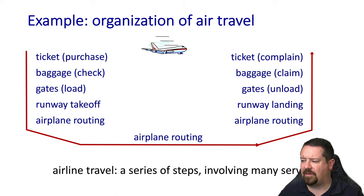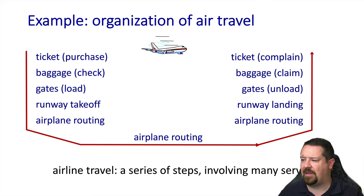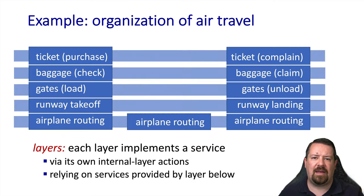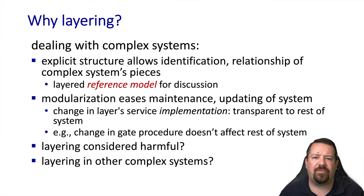The aircraft routing completes, there's a landing that corresponds to the takeoff, you unload at a gate, claim baggage, and of course we can't forget going back to the ticket counter to complain about the experience. Each of these layers implements a service, and each of them relies on services provided by the layer below. We define this layered structure in order to allow us to explicitly define the services that are expected of each component of the system.